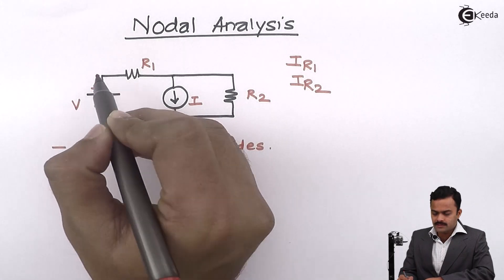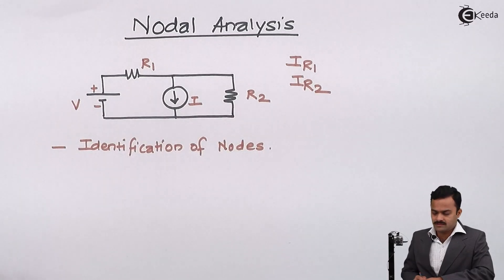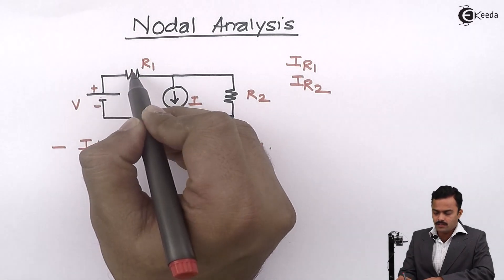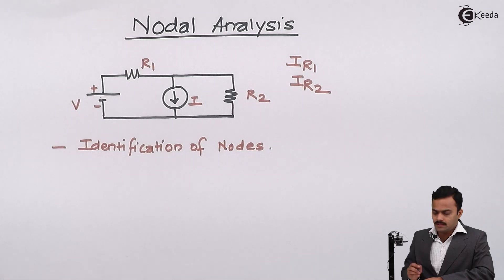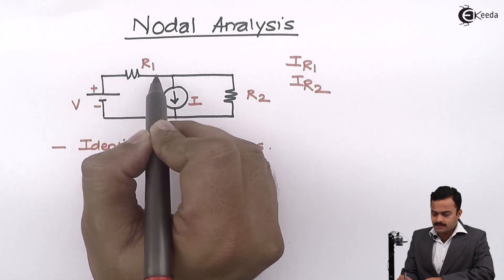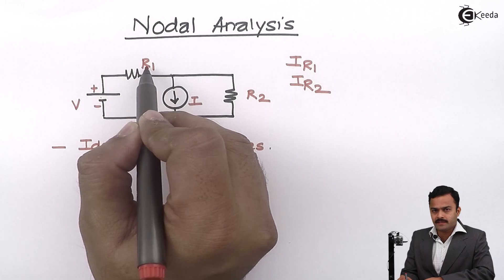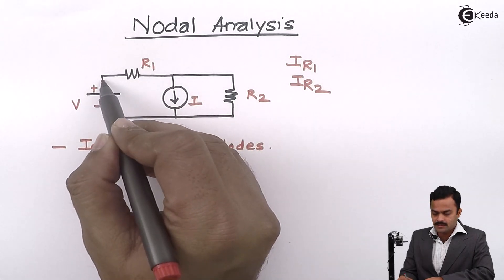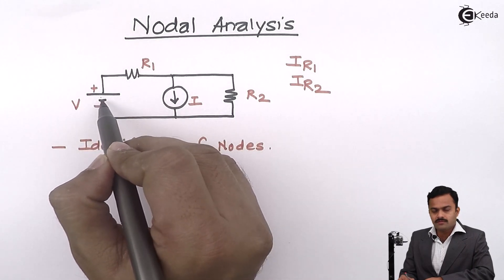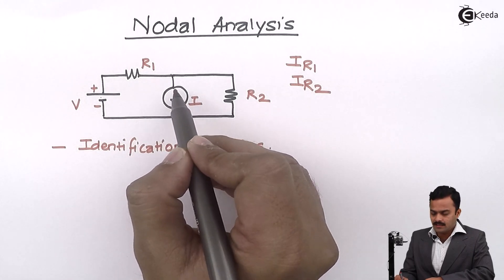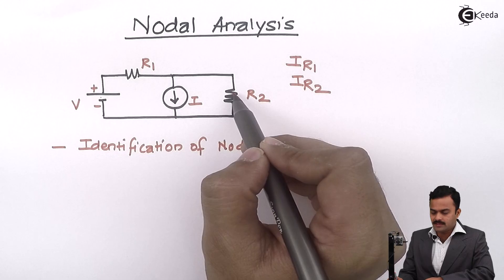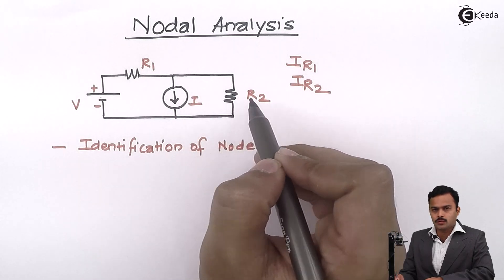A point where only two branches meet cannot be considered a node for nodal analysis. A branch means the number of elements present between two nodes. So a segment with a resistance is a branch, a segment with a voltage source is a branch, a segment with a current source is a branch, and a segment with resistance R2 is also a branch.